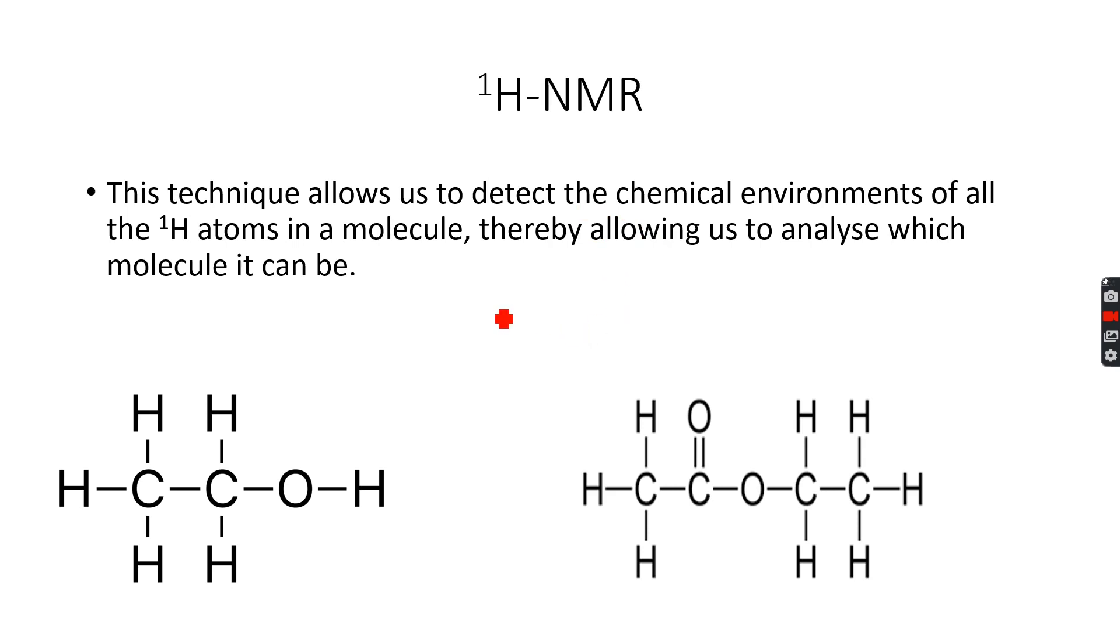What exactly is a chemical environment? If you look at this ethanol molecule, you can see protons on three different atoms. There are three protons on this carbon atom and two protons on this carbon atom.